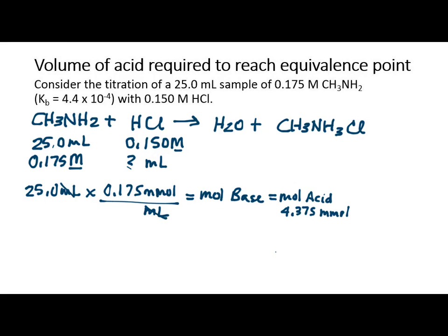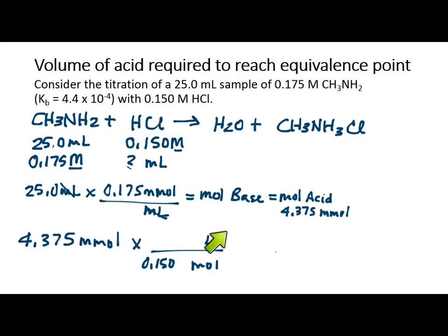What volume of HCl do I need to get that many millimoles of acid? We can think of this in terms of dimensional analysis: 4.375 millimoles divided by the concentration, 0.150 millimoles per milliliter. The millimoles cancel, so 4.375 divided by 0.15 equals 29.2 milliliters.